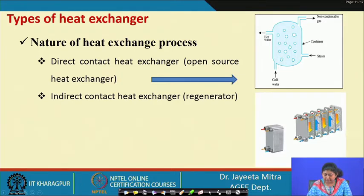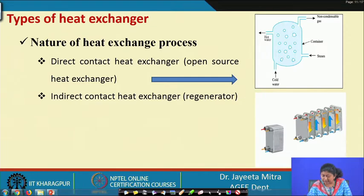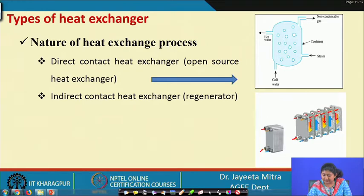In contrast, the indirect contact heat exchanger — like a plate heat exchanger — has no direct contact or mixing between the two streams. The hot fluid enters from one side of a channel, follows the corrugated path of the plates, and exits from the other side, while the cold fluid entering from a different side exchanges heat via the heat exchanger surface. These are called indirect contact heat exchangers.